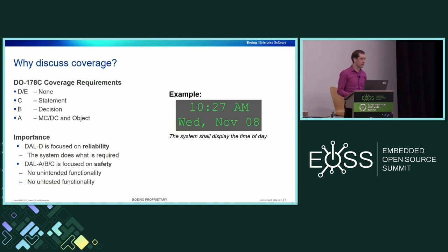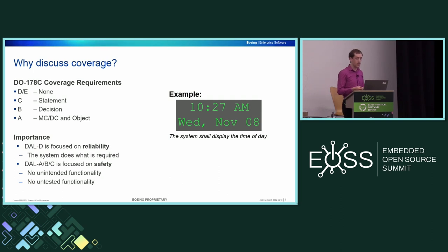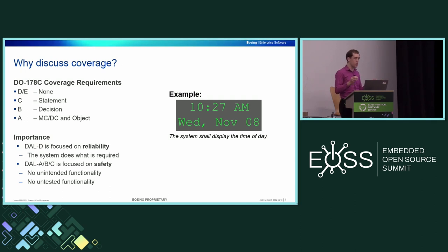Here's a quick example of what unintended functionality might look like. If we have a single requirement for our software system — say we're just displaying a clock in the cockpit that only needs to display the time of day — this clock would be fine if assessed at DAL D because it displays the time. However, if this were a DAL A, B, or C system, it has extraneous functionality: it displays the day of the week and the date. When you look at something like the Linux kernel, which is huge and not always transparent about all its functionality, code coverage is one of the tools we can use to find areas that we may not have tested or may not intend to be there.